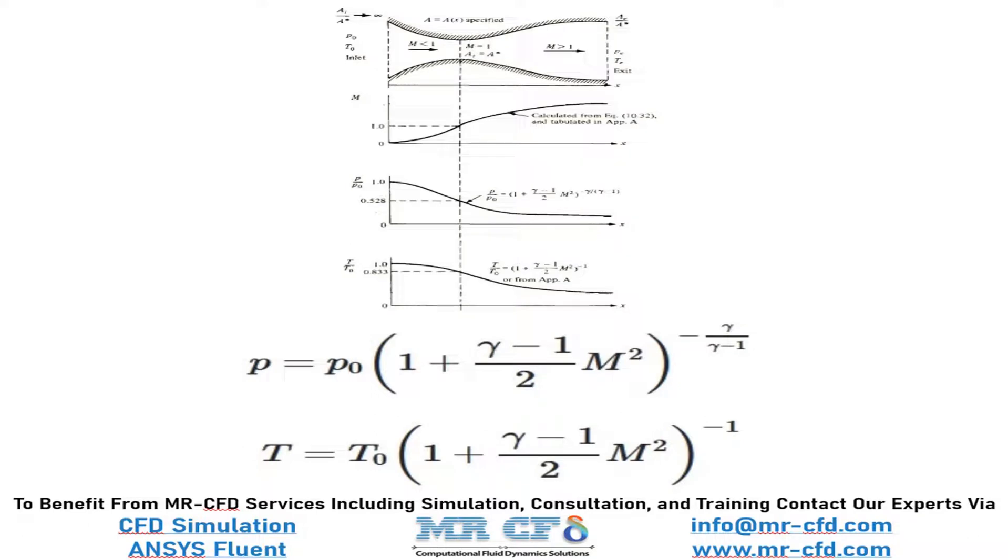In this project, the airflow will enter the convergent-divergent nozzle with a pressure of 70 bars and Mach number of 0.2 with a high temperature. After passing the throat zone, the airflow will gain speed and lose its temperature as it passes through the diffuser.